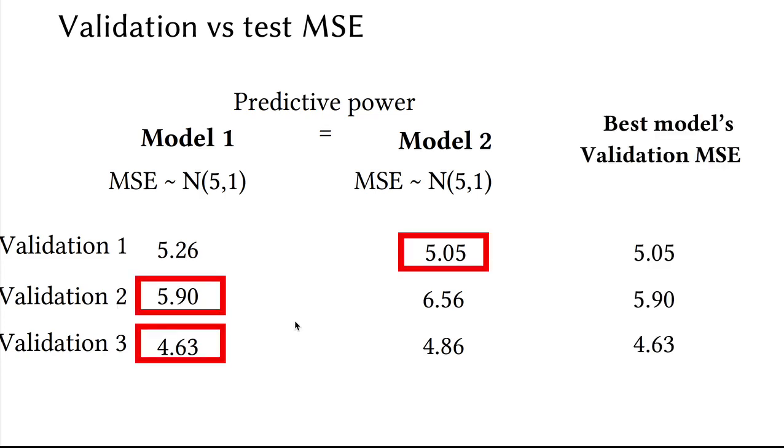So if we collect the mean squared errors of the best performing model, we will get some random variable that is distributed not according to the true distribution, not according to just a normal variable with mean 5 and standard deviation 1, but a minimum between the two random processes. And this is the key.